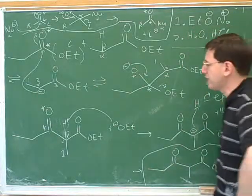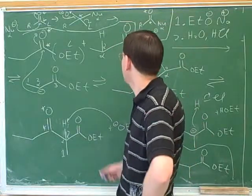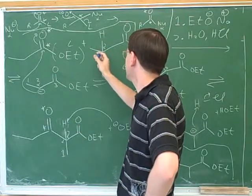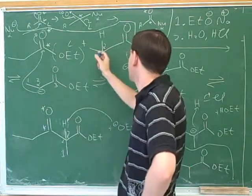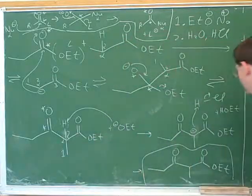This is important because it means the Claisen condensation wouldn't work if the alpha hydrogen had not, if the alpha carbon hadn't started with two hydrogens. Because if it only had one, if it didn't have enough hydrogens, it couldn't do this last step. So we need to start with an alpha carbon with at least two hydrogens so it can do this last step, which pulls us forward.